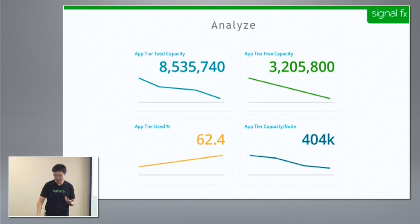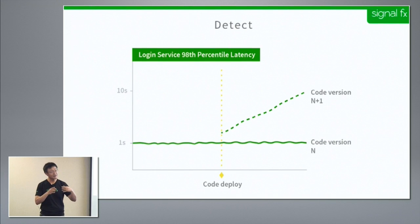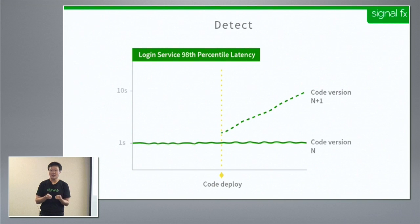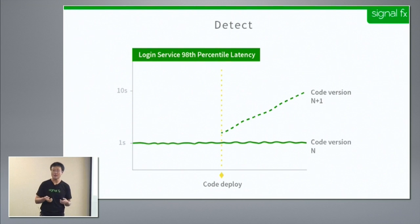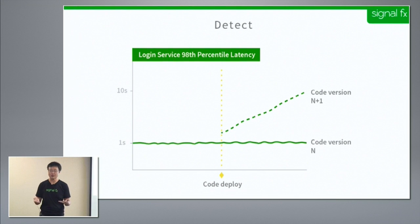Once you build up an analysis and define a signal output, you want to create a detector in case it becomes anomalous. For example, SignalFX has a policy to run at no more than 50% capacity at all times for every one of our 15 microservices. We have detectors set up for each service so that if capacity exceeds 50% for some duration, the service owner is notified.